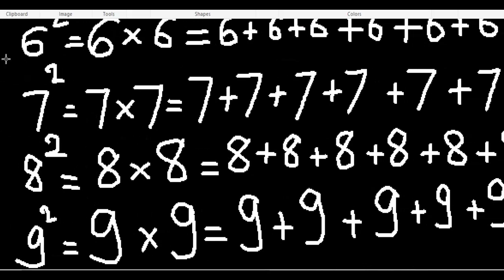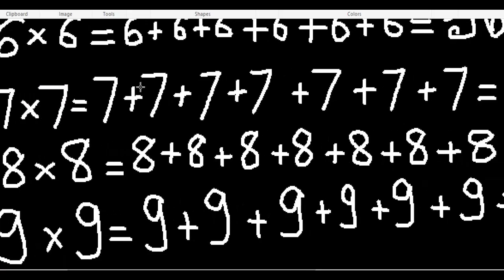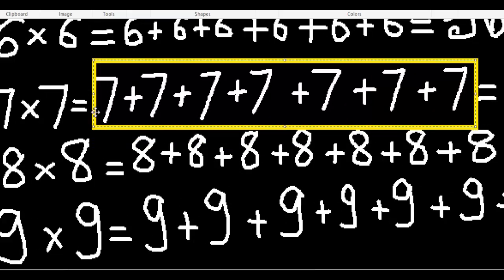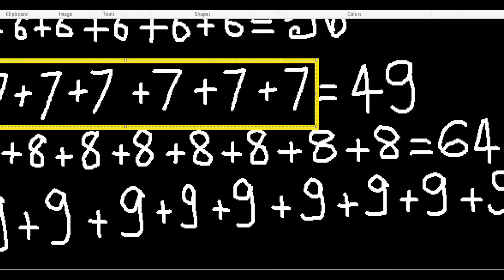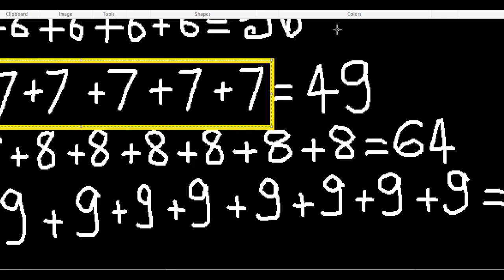Seven squared means seven times seven. That is seven plus seven plus seven plus seven plus seven plus seven plus seven, and the answer is 49.